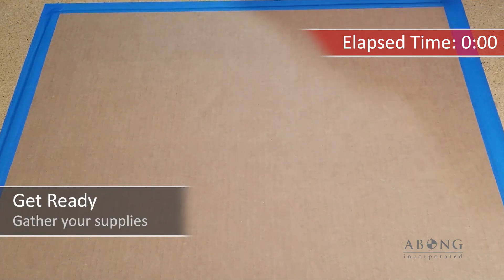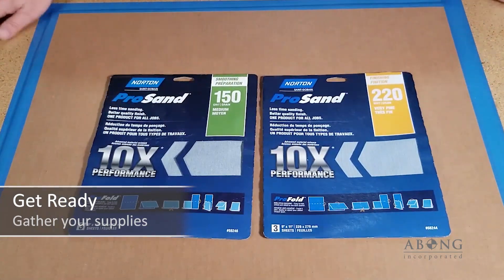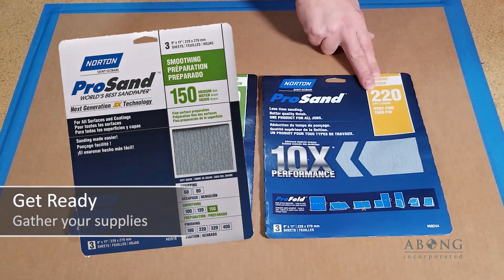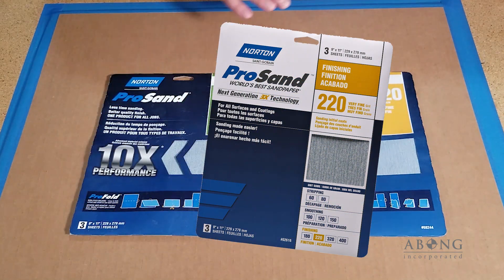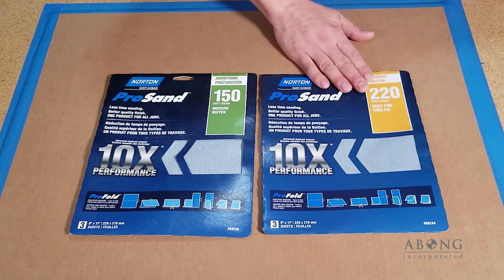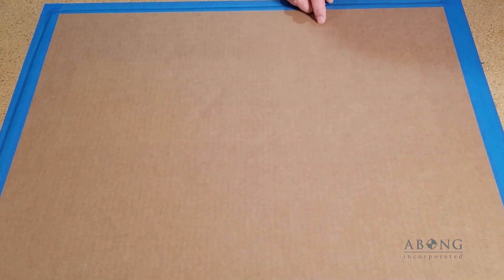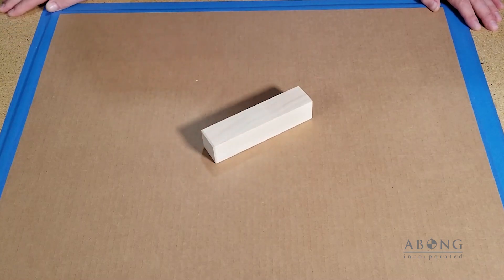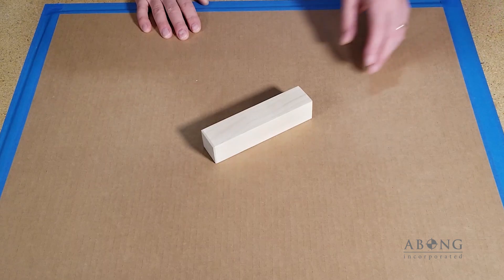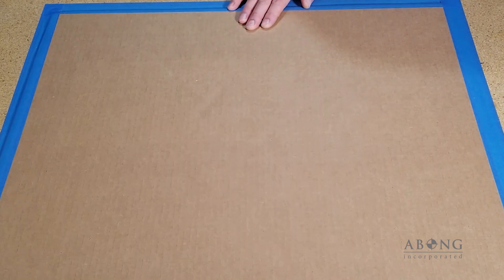So first let's get all of our supplies together. First thing you're going to need is sandpaper. We're going to use 150 grit and 220. The 150 grit is for removing all the laser residue and any dirt or marks that might be on the wood, and the 220 provides a nice clean finish. I use a sanding block, which is nothing special, just an ordinary block of wood. It could be a piece of 2x4 or any scrap you have lying around. It allows you to keep your edges square and apply pressure evenly to the part.